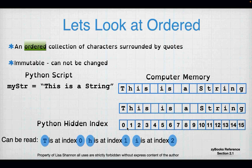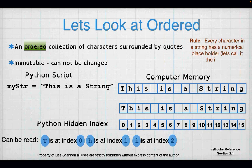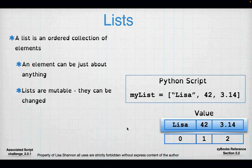A list is an ordered collection of elements — and I didn't say characters because a list can contain strings, integers, floats, Booleans, another list, a dictionary, all kinds of things. Lists are mutable, which means they can be changed. When dealing with the syntax for a list, I have a left square bracket followed by elements. In my Python script, I have the string 'Lisa', the number 42, and 3.14.